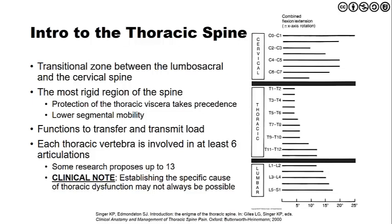First, we need to recognize that the thoracic spine represents a transitional zone between the lumbosacral and the cervical spine. Both the lumbosacral and the cervical spine have greater amounts of mobility segmentally than the thoracic spine. The thoracic spine is the most rigid region of the spine, and it is that way for a couple different reasons. First, it functions to protect the thoracic viscera, where we find a significant amount of organs that are crucial for vitality and life. The ribcage, as well as the thoracic spine, serves to protect those areas. Additionally, it functions to transfer and transmit load, and if you have a very mobile segment or region, load transmission is not as easily done.